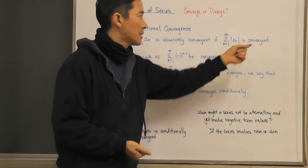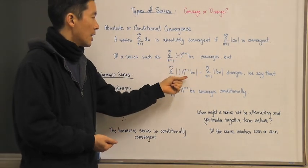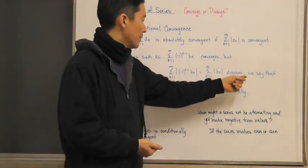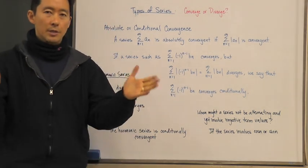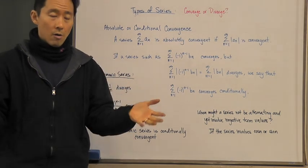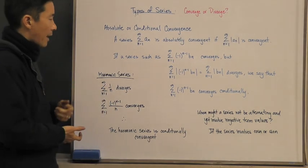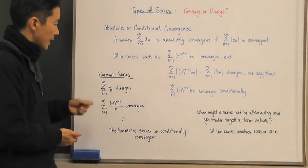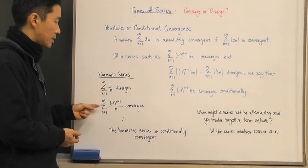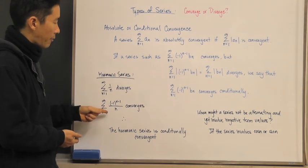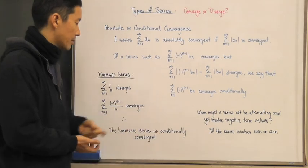If an alternating series converges but the series of its absolute values diverges, we say it converges only conditionally — the condition being that all terms are made positive. As we saw with the harmonic series, the harmonic series diverges, but its alternating version converges, so the alternating harmonic series is only conditionally convergent.